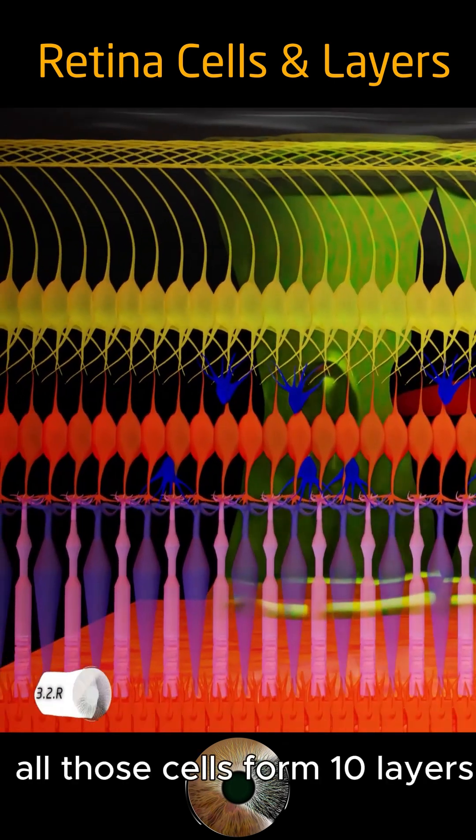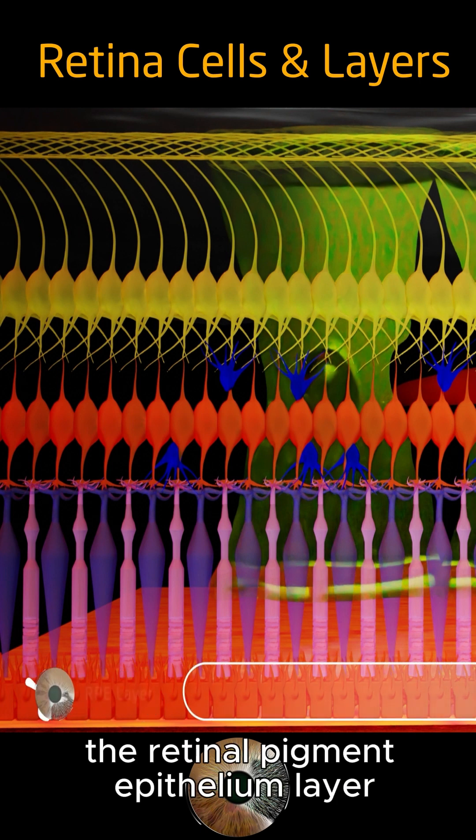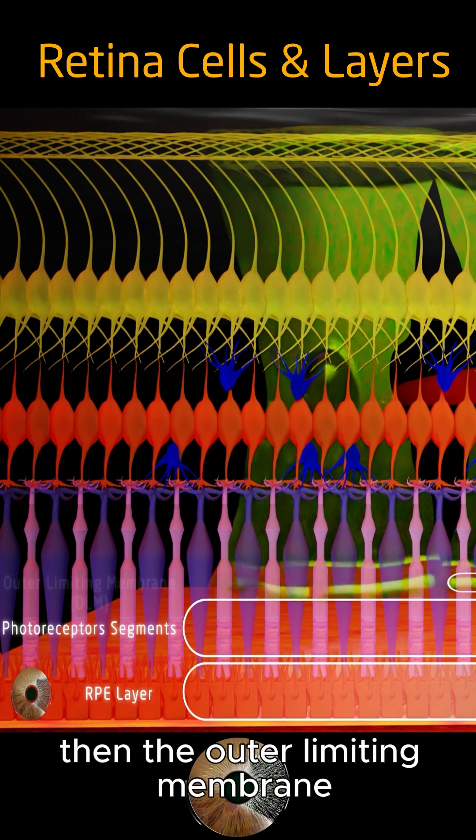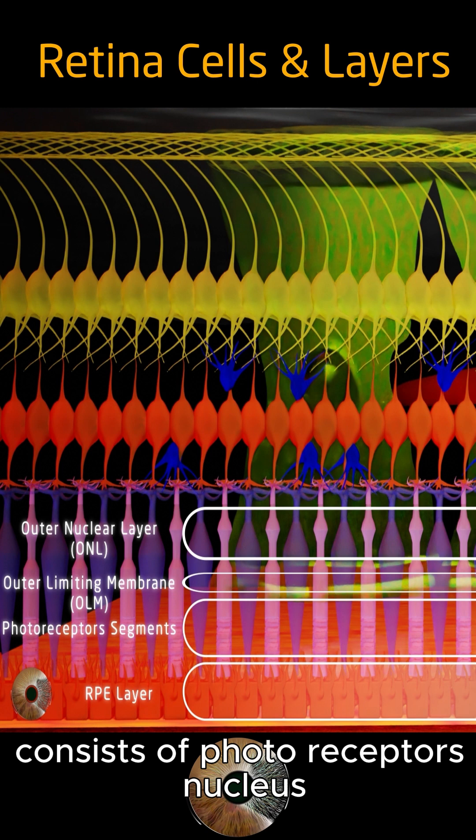All those cells form 10 layers organized from outward to inward. The retinal pigment epithelium layer, then the segments of the photoreceptors, then the outer limiting membrane, followed by an outer nuclear layer consists of photoreceptors' nucleus.